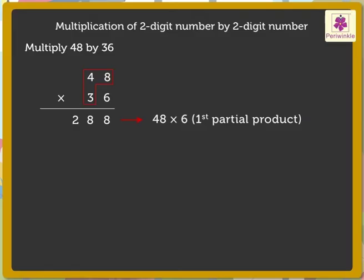Multiply the multiplicand, that is 48, by the 3 in the 10th place of the multiplier. As the digit 3 is in the 10th place of the multiplier, we are actually multiplying 48 by 30. So we write a 0 below the digit 8 of the first partial product. Next, 8 into 3 is equal to 24. Carry 2 above the 10th column and write 4 below the digit 8 in the 10th column of the answer.